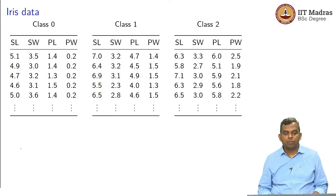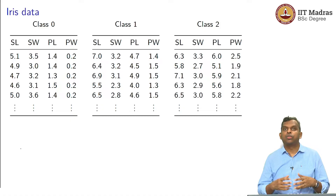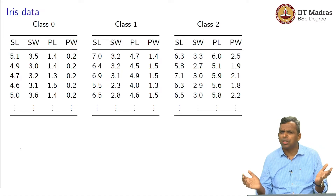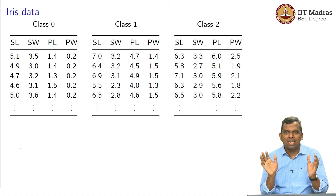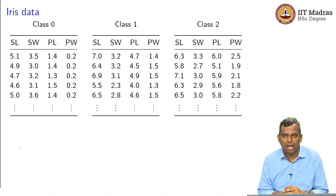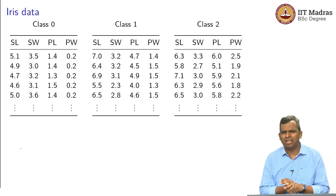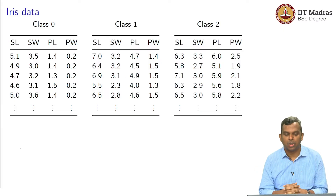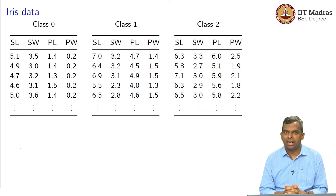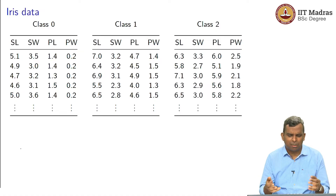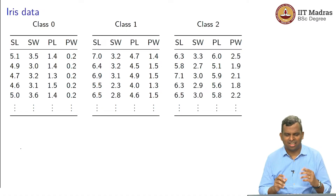Always, the first thing you do when a dataset is presented to you is to see it. You cannot see its entirety, but at least see a part of it. This is just a small tabulation. I will also show you how to get this data into a Python notebook — this Iris dataset is so standard that almost all statistical packages will have it inbuilt. These are the three classes and that is the data, all in centimeters, and you can see its range, et cetera.